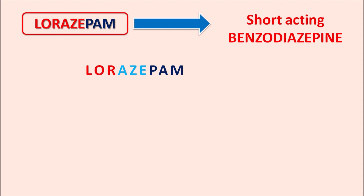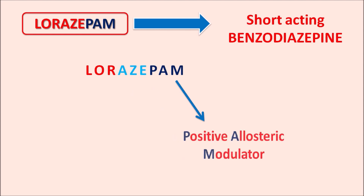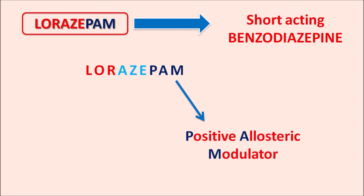The suffix '-pam' indicates positive allosteric modulator. So lorazepam is a positive allosteric modulator acting on the GABA-A receptors. It binds to the GABA-A receptors at an allosteric site — the site other than the binding site of GABA — and promotes the action of GABA, thereby acting as a positive modulator. That is why '-pam' indicates positive allosteric modulator.